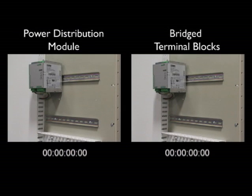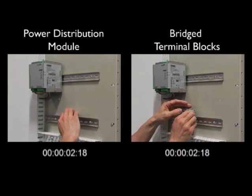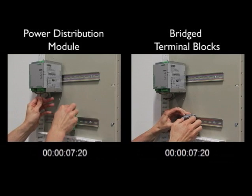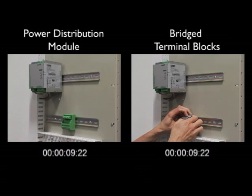In this exercise we will demonstrate wire preparation for 24 volt power distribution to eight different field devices. On the left this will be done using a power distribution module, while on the right bridge terminal blocks will be used.